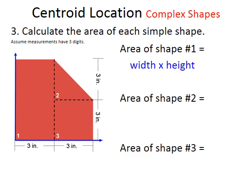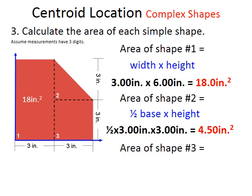In the next few slides, we're going to break down all the individual components of the formulas. The first step is to calculate the areas of each individual shape. For shape one, we know it's width times height and we get 18 square inches. For the triangle, we get 4.5 square inches, and for the square we get 9 square inches.